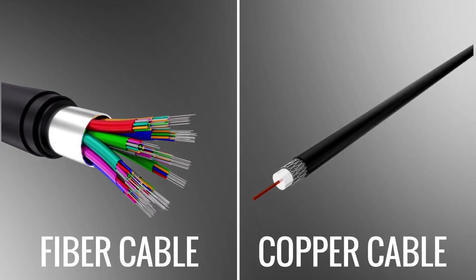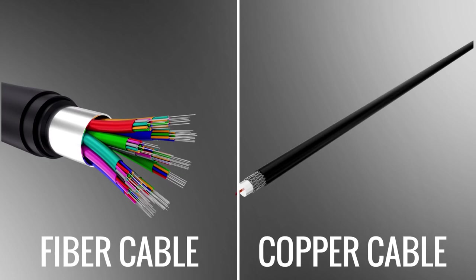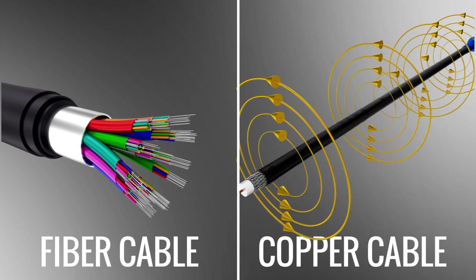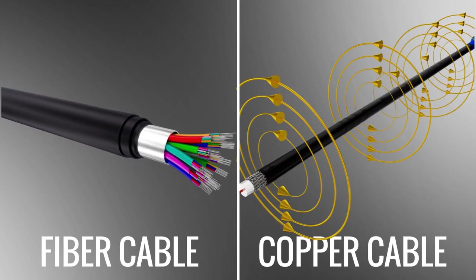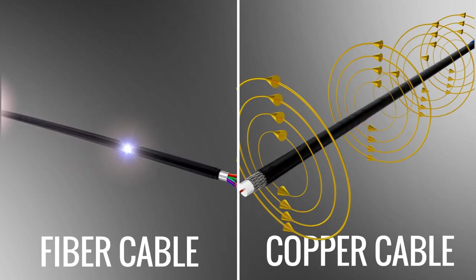The flow of electrons in a copper cable generates a magnetic field even outside of the cable that can cause electromagnetic interference. On the other hand, the light which travels through the optical cable is always confined within the fiber. Thus, the chance of interaction with an external signal does not exist.